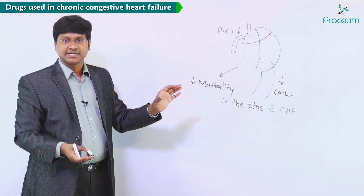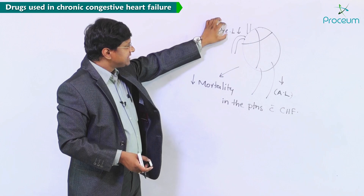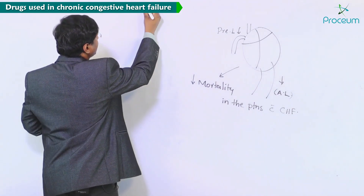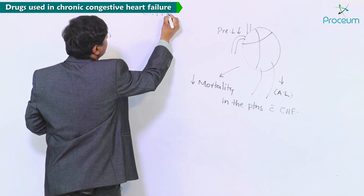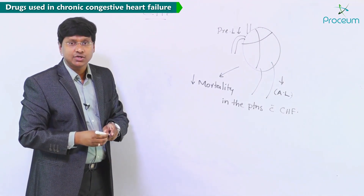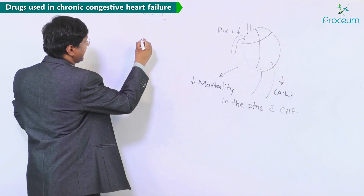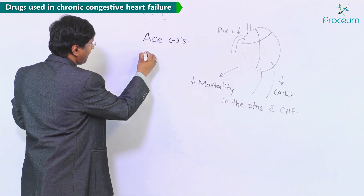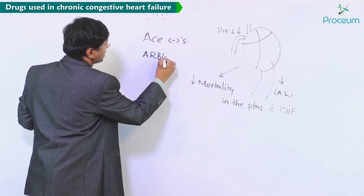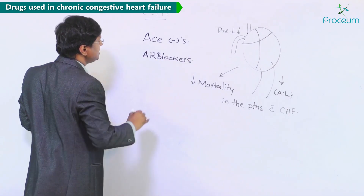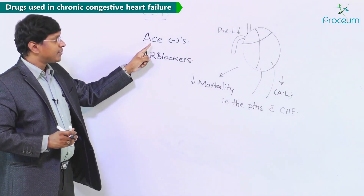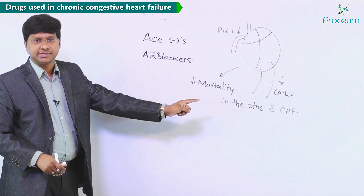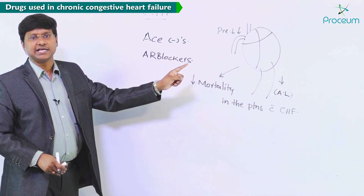Let me discuss the groups of drugs which will reduce the preload as well as the afterload. The drugs used in chronic congestive heart failure include, number one, ACE inhibitors, and number two, angiotensin receptor blockers. When using ACE inhibitors or angiotensin receptor blockers, you are nullifying the compensatory renin-angiotensin-aldosterone system, thereby reducing the afterload.